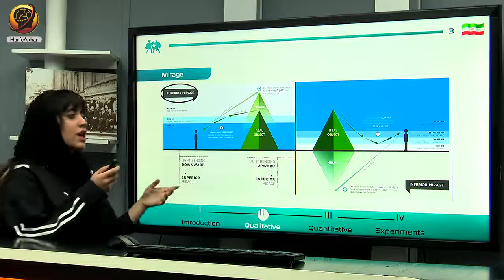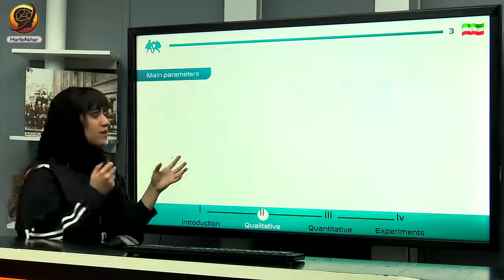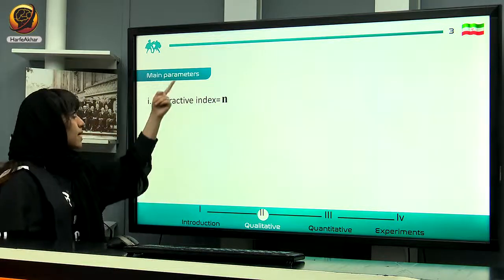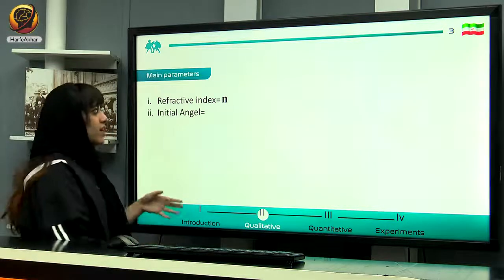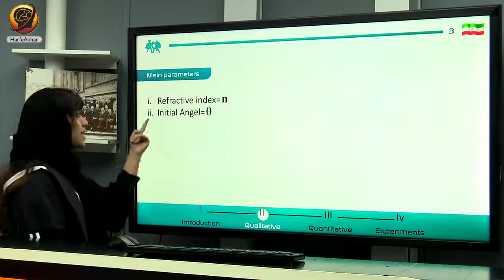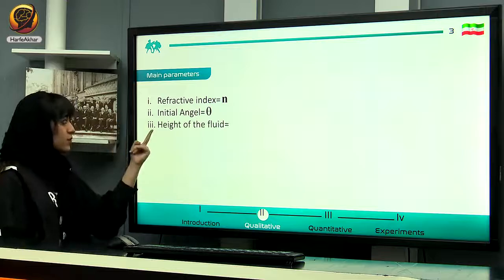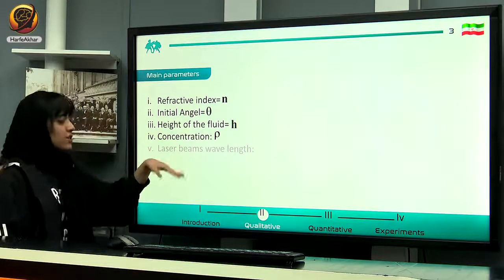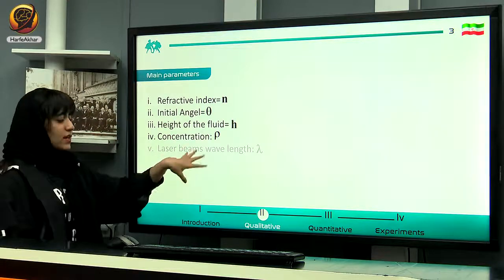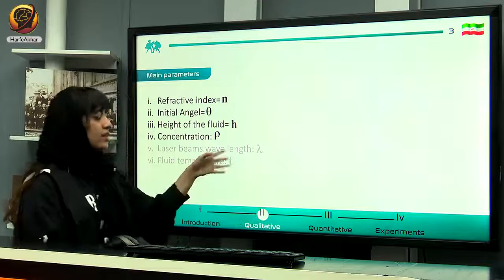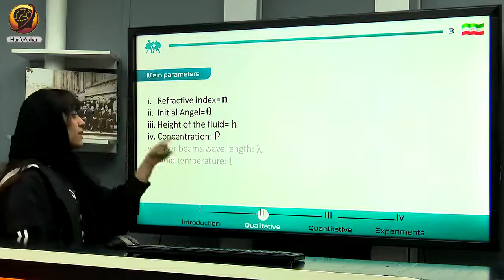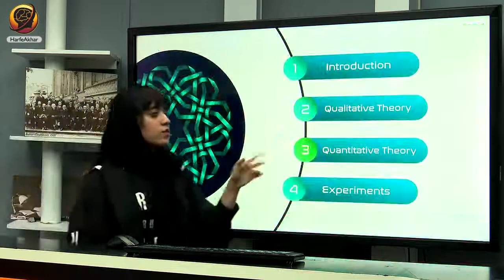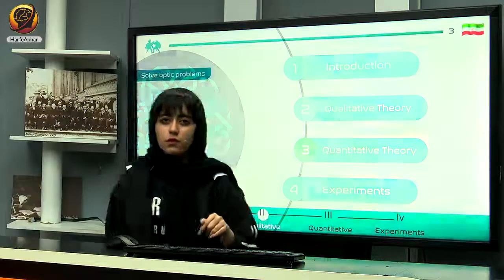We have two different types of mirages, of which Fata Morgana is the superior mirage. I will not focus on inferior mirages since the question does not ask about them. The main parameters that can affect the amount of bending include: the refractive index, the initial angle, the height of the fluid, the concentration, the wavelength of the laser beam, and the fluid's temperature — though the last two were not investigated here.